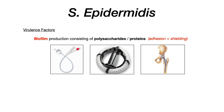The biofilm helps with: one, adhesion, so that it can stick to other substances or devices; and two, shielding. Once the biofilm is created, it not only helps with adhesion to different materials, but it also physically shields the epidermidis to prevent things from being able to kill it or remove it from the body or from whatever device it adheres to. So classically, Staph epidermidis is associated with device-associated infections.